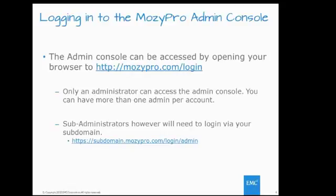To log in to the admin console, the root administrator would go directly to moseipro.com/login or mosey.com/login — only the root administrator can log in here. Sub-administrators need to go through their subdomain, which can be set up by reaching out to your sales staff or support. If a sub-administrator tries to log in at mosey.com/login, they'll be redirected back with no error, and using the forgot password link will not send an email since they're not a direct customer of the MOSI website.